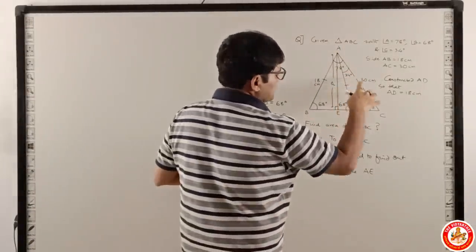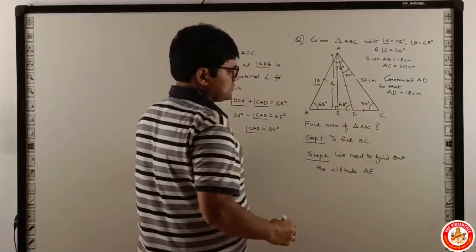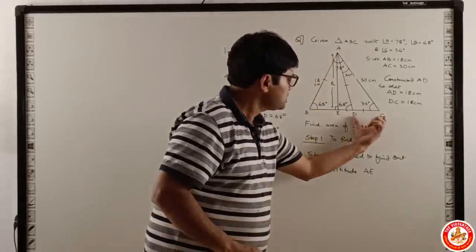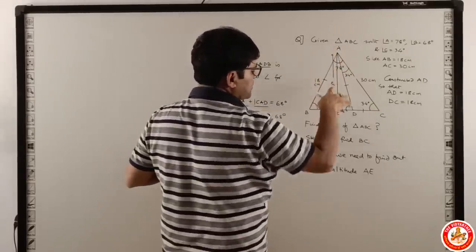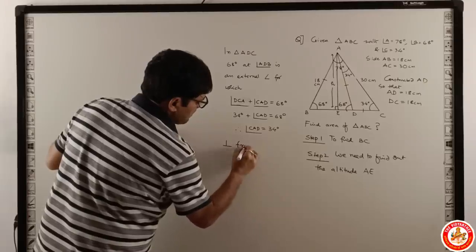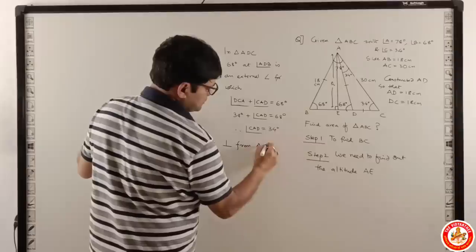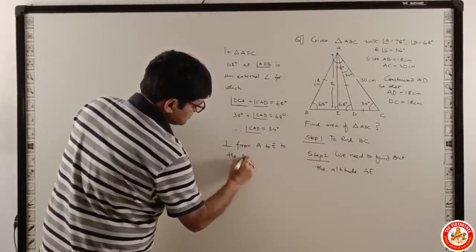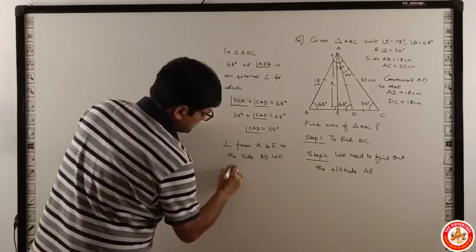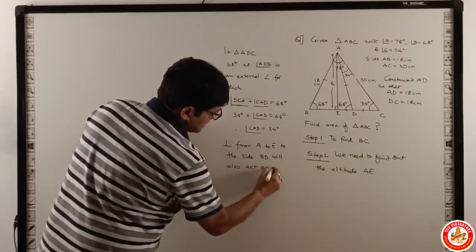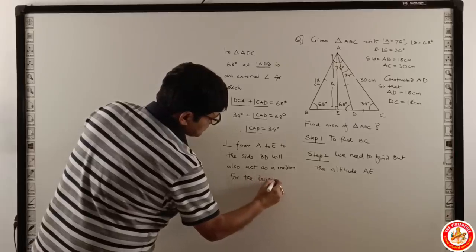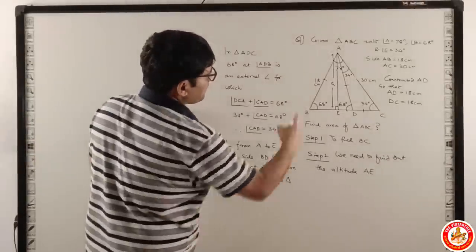If you take this as 34 and this as 34, this side is also equal to this side. This implies that DC also is 30 cm. We will draw a perpendicular from A to E to the side BD, which will also act as a median for the isosceles triangle ABD.